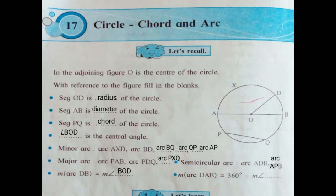Measure of arc DAB equals 360 degrees minus measure of angle ___. Arc DAB is the major arc. So the formula is: measure of a major arc equals 360 degrees minus measure of a central angle. Measure of major arc DAB equals 360 degrees minus measure of central angle BOD.